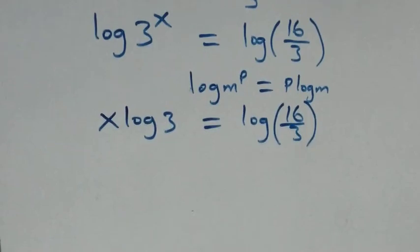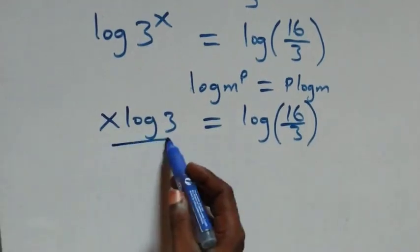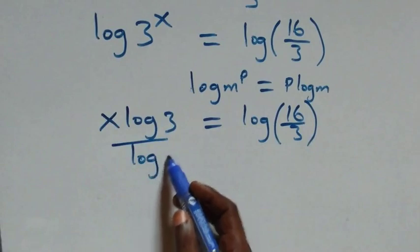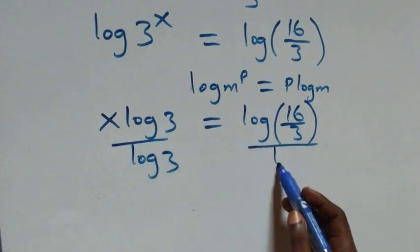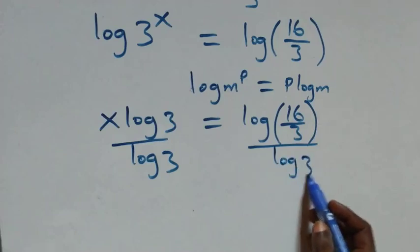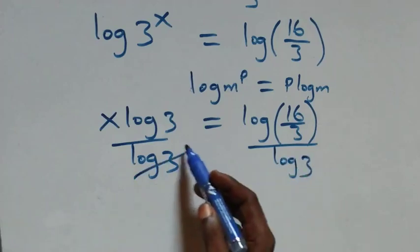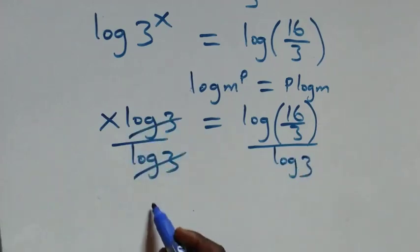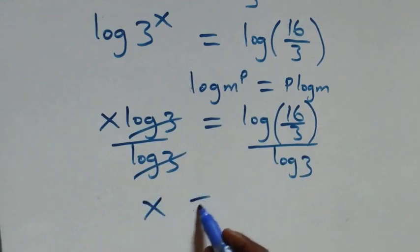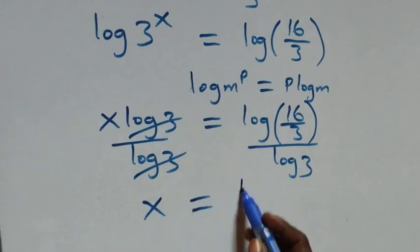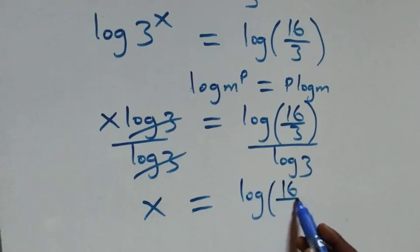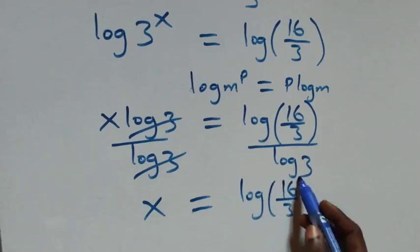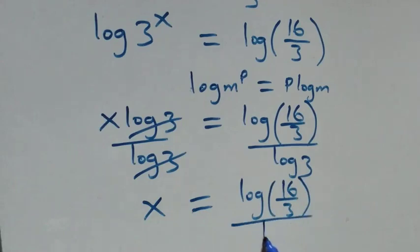We divide both sides by log 3. Dividing this side by log 3 and also this side by log 3, the log 3 terms cancel each other, and we have x left, which is equal to log(16/3) divided by log 3.